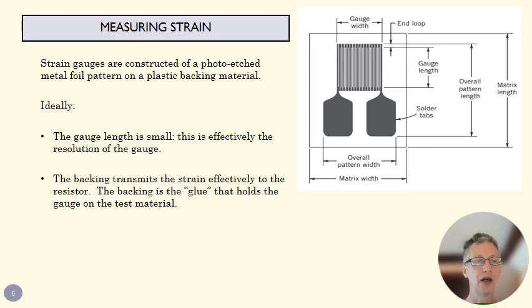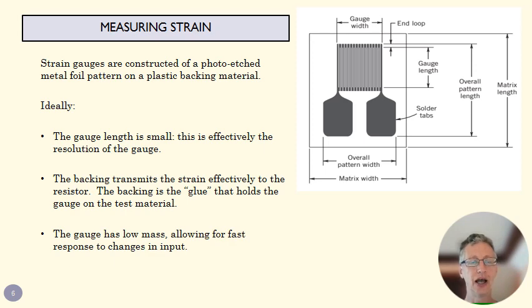We want to make sure that our glue, our backing, clearly attaches that wire to the surface that we're interested in. We can't have any stretch there or the actual change in the wire length and the strain gauge length won't match what's happening to the material of interest. And we want it to be really low mass.